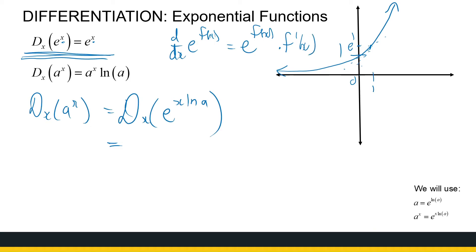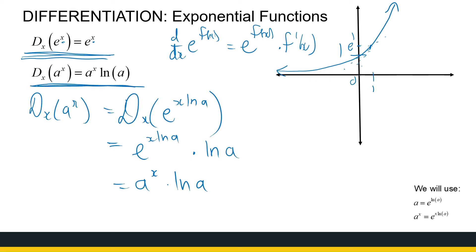So the derivative of e to the power x·ln a is just e to the power x·ln a times the derivative of x·ln a. Now ln a is a constant, so it's x times a constant, and the derivative of that is just ln a. So we get e to the power x·ln a, which is just a to the power x times ln a. In general, the derivative of a to the power x is a to the power x times ln a. At the end of this playlist, using the definition of the derivative, I will show why the derivative of e to the power x is e to the power x.